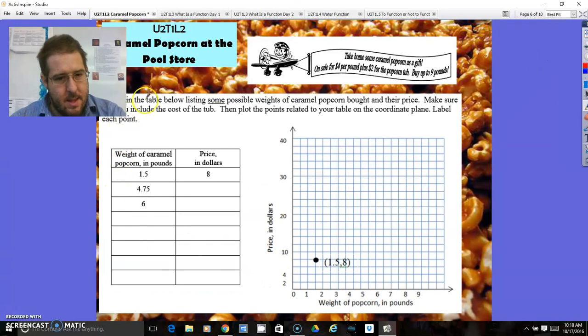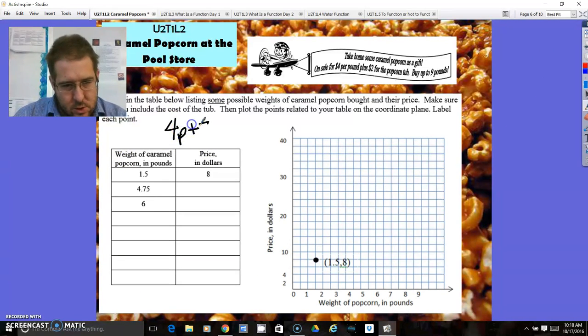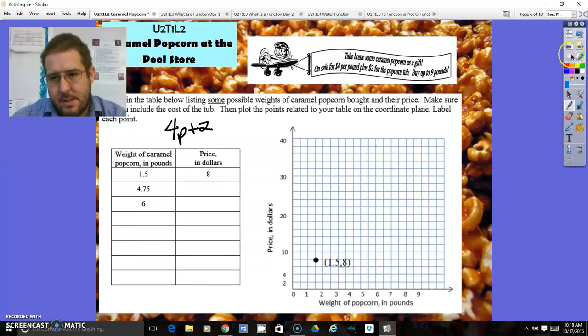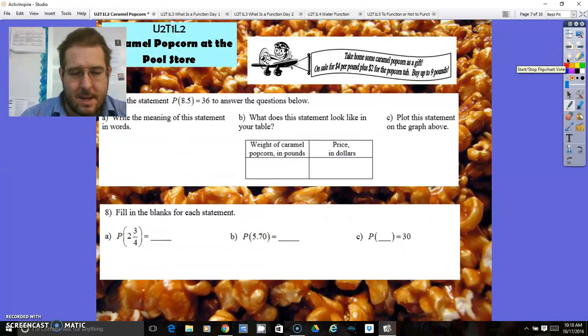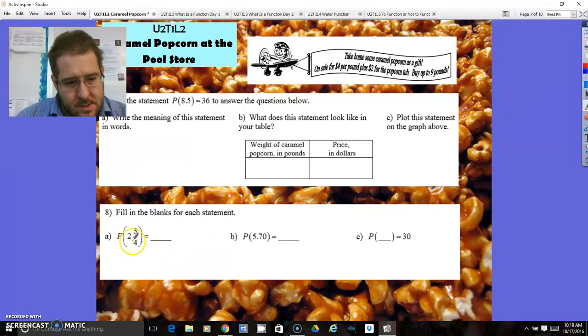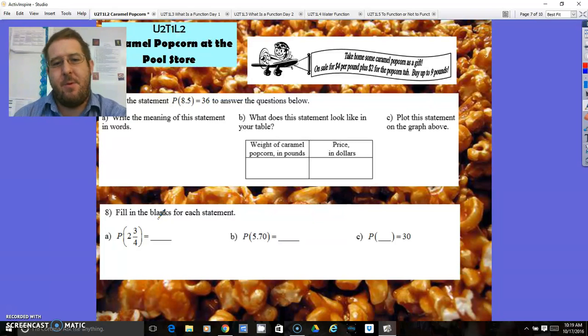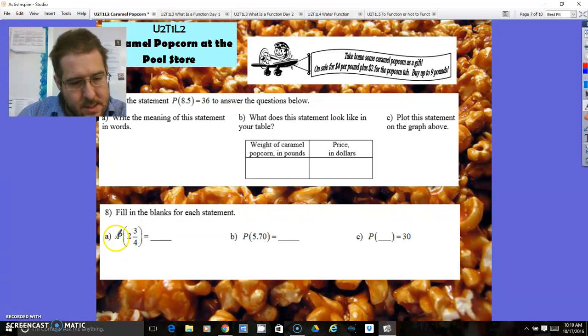It's going to use that same 4p plus 2 format. This times 4 plus 2 would be that answer. Then plot your points and label it, and then you can connect it. This is practicing using function notation. So the p of 2¾, that's the amount of pounds, is 2¾ pounds. So multiply that by 4 and then add 2. And I believe you get an answer of $24.80.